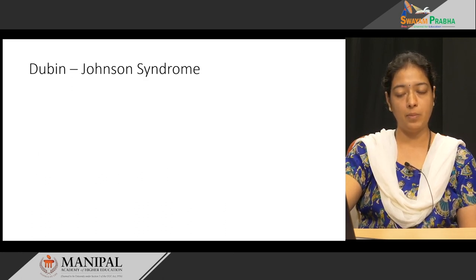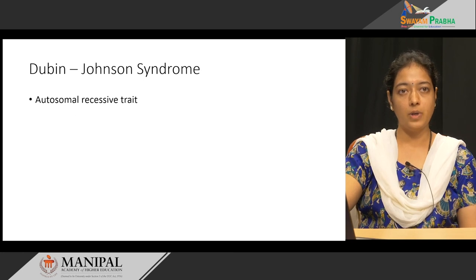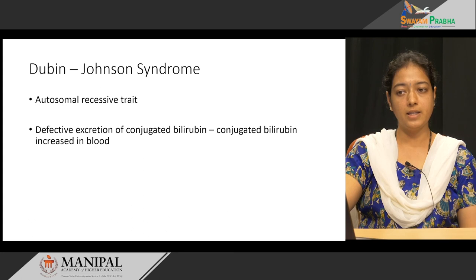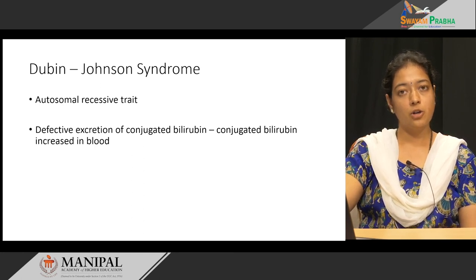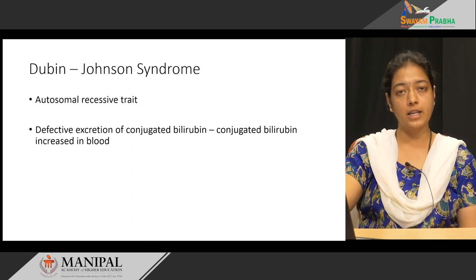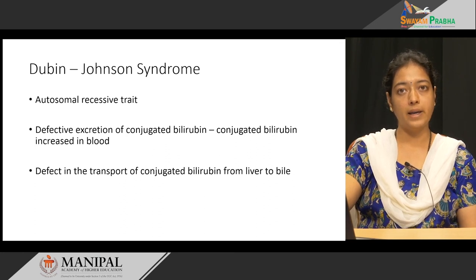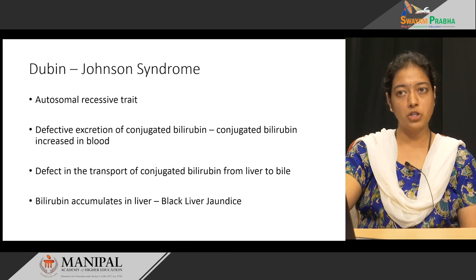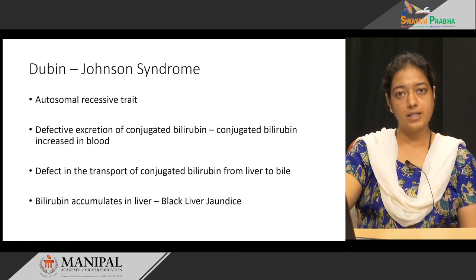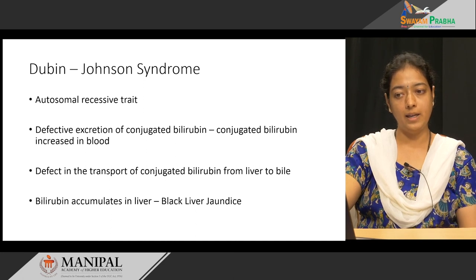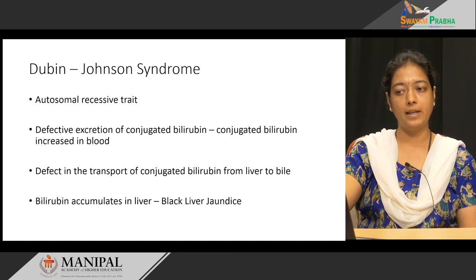The third congenital hyperbilirubinemia is Dubin-Johnson syndrome, which is an autosomal recessive trait. The problem here is a defect in the excretion of conjugated bilirubin. Conjugation occurs normally, but the transport of conjugated bilirubin from the liver to the bile is defective, causing conjugated bilirubin to accumulate in the liver and leading to black liver jaundice.